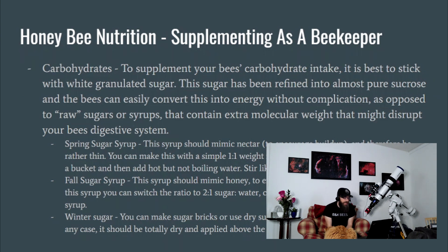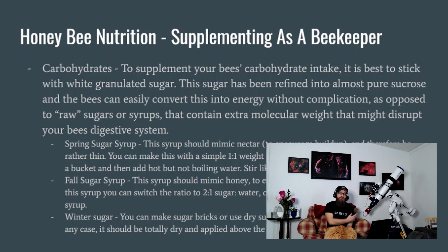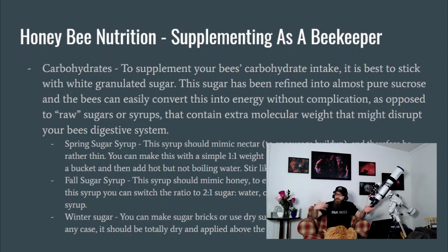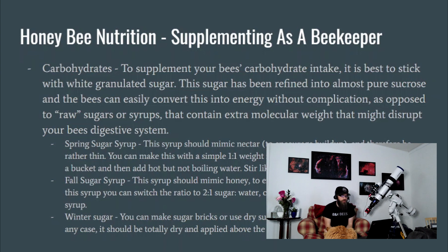To supplement your bees' carbohydrate intake, it's best to stick with white granulated sugar. Sugar in the raw may seem like a good idea, but that's counterintuitive — the stuff that makes sugar in the raw brown are plant solids that are difficult for bees to digest. So regardless of the source, make sure it's white granulated sugar. Whether it's beet or cane sugar is up to you, because after the refinement process it is pretty much pure sucrose. Avoid anything brown and get just white granulated sugar.